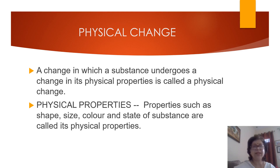Physical change: a change in which a substance undergoes a change in its physical properties is called a physical change. The different physical properties are shape, size, color, and state. State means solid, liquid, or gas. Properties such as shape, size, color, and state of a substance are called its physical properties. In a physical change, the physical properties may change.